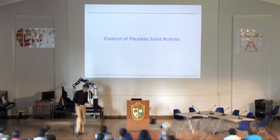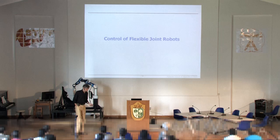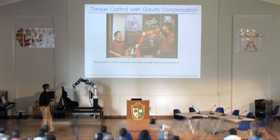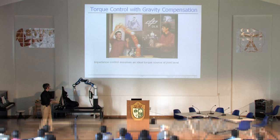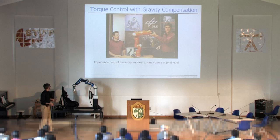This was it on the impedance control of the rigid robot, and now I will move to the flexible joint case. The baseline is the joint torque controller, and you need a joint torque controller which compensates for friction. Of course you need a good model of the robot, gravity compensation and so on, because you assume an ideal torque source at joint level.